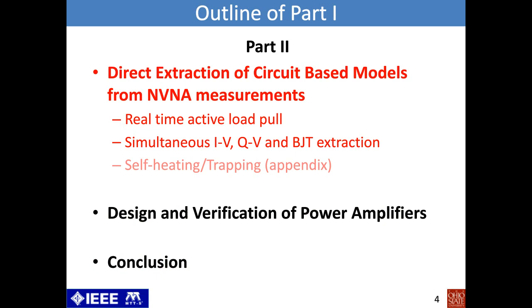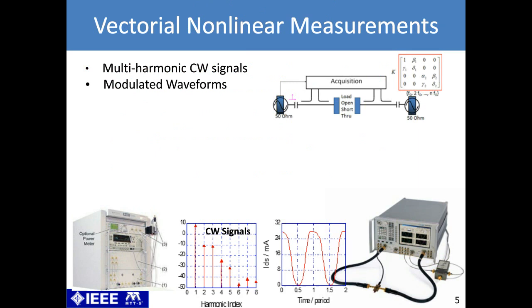We'll start with the direct extraction of circuit-based models from NVNA measurements. We'll first introduce real-time active load pull and then present the simultaneous extraction of IV, charge voltage, and also parasitic bipolar transistor in SOS MOSFET. In Part 1, we introduced vectorial nonlinear measurements with NVNA, and we saw we could acquire the multi-harmonic CW signal — the harmonics and also the reconstructed current waveform are shown at the bottom of the screen.